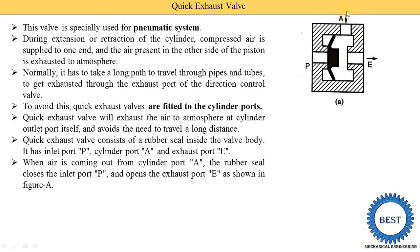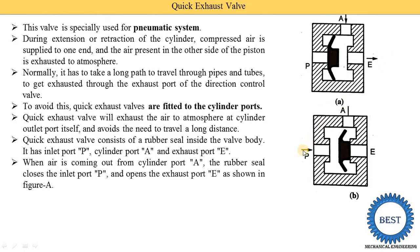As shown in figure A, the arrow near the A port indicates exhaust air coming from the actuator or cylinder entering the A port. When air comes from this side, the rubber seal moves to the left, closing the P port. The air coming from the A port is then supplied to the exhaust port E and from there released to the atmosphere. When compressed air is supplied from the compressor to the P port, the pressurized air moves the rubber seal toward the exhaust port, closing it.